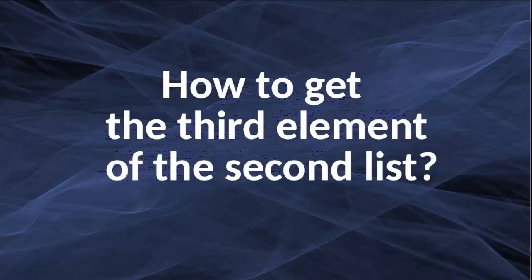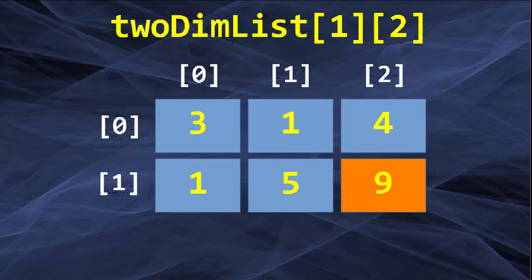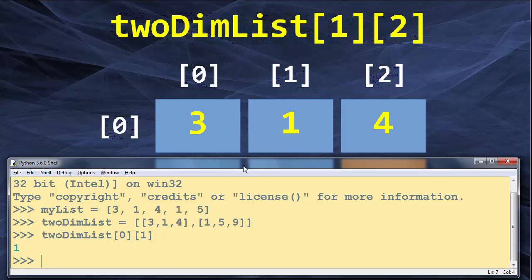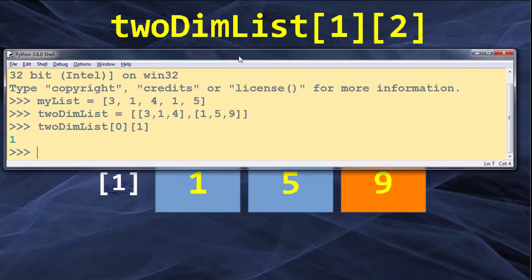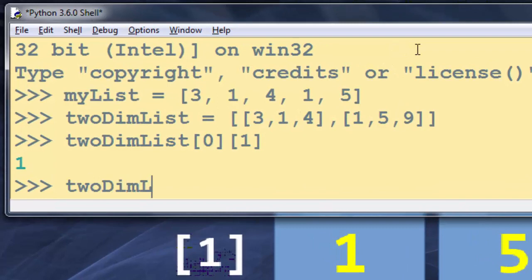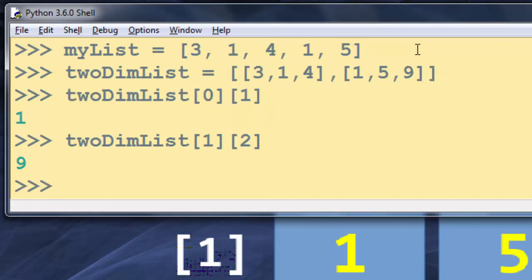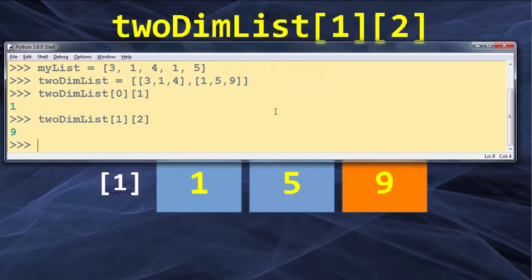Now we have a second example: how to get the third element of the second list. The index of the second list is 1, and the index of the third element within our second list is 2. So let's type that code in our Python IDLE — we want to get the second list which has index 1 and the third element within it which has index 2. And we get number 9 as the result.